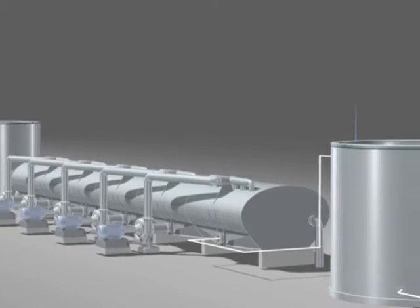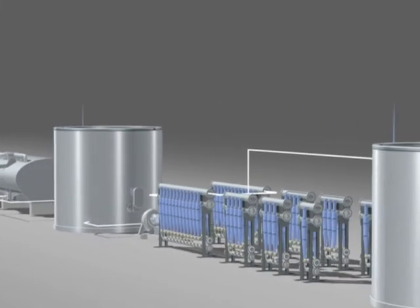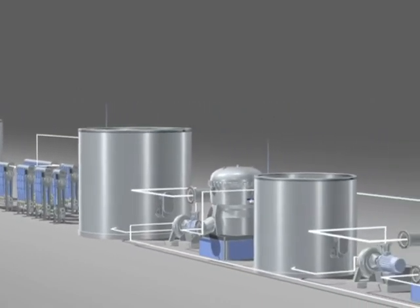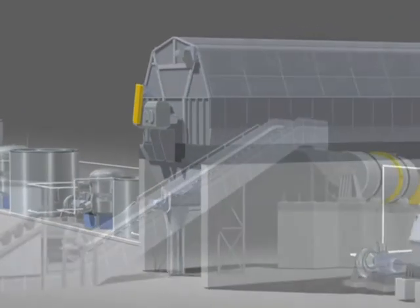This philosophy has led to the ECHO process. This film shows in very simplified form the enormous advantages that can be achieved with the ECHO process in a conventional two-loop de-inking line with a capacity of 800 tons per day.